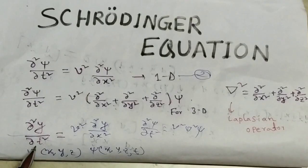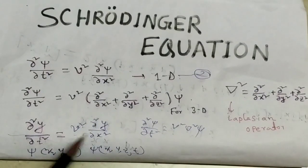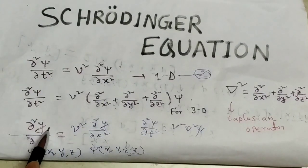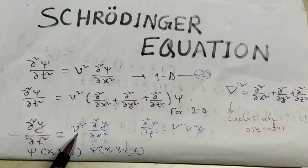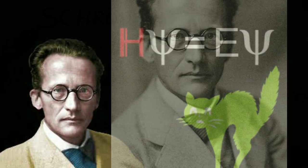According to Newtonian mechanics, if a particle is moving like a wave, its mathematical equation is written as: del squared y / del t squared equals v squared times del squared y / del x squared, where y is the amplitude of the wave and v is the velocity. This equation describes the wave nature of a macroscopic body, but cannot be applied to microscopic bodies like electrons, protons, or neutrons.